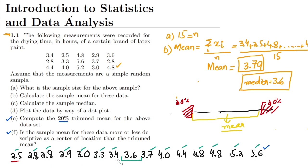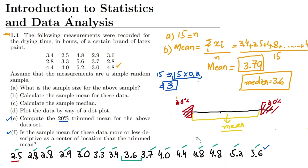Looking at the actual data set, we need to trim 20%. The 20% of 15 is 0.2 multiplied by 15, which equals 3. So we have to remove the three numbers from the lower end and three numbers from the upper end, and then calculate the mean of what remains.